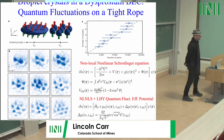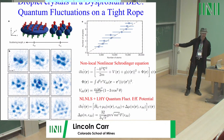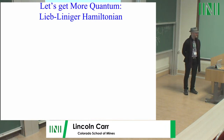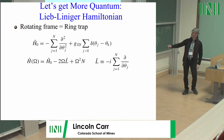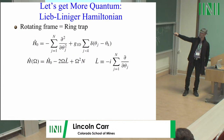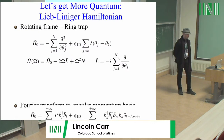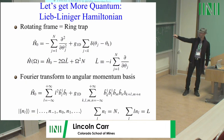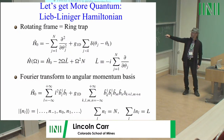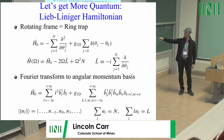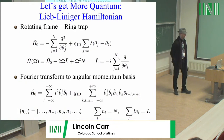Let's get more quantum. Let's think about the Lieb-Liniger Hamiltonian — what happens when you have atoms interacting on a ring with a contact interaction. You can fully transform this to the angular momentum basis, and then you have hopping between angular momentum states, the interaction, and conservation of angular momentum. I can solve this problem in a Fock space subject to two conservation laws: total number of atoms and total angular momentum are conserved.